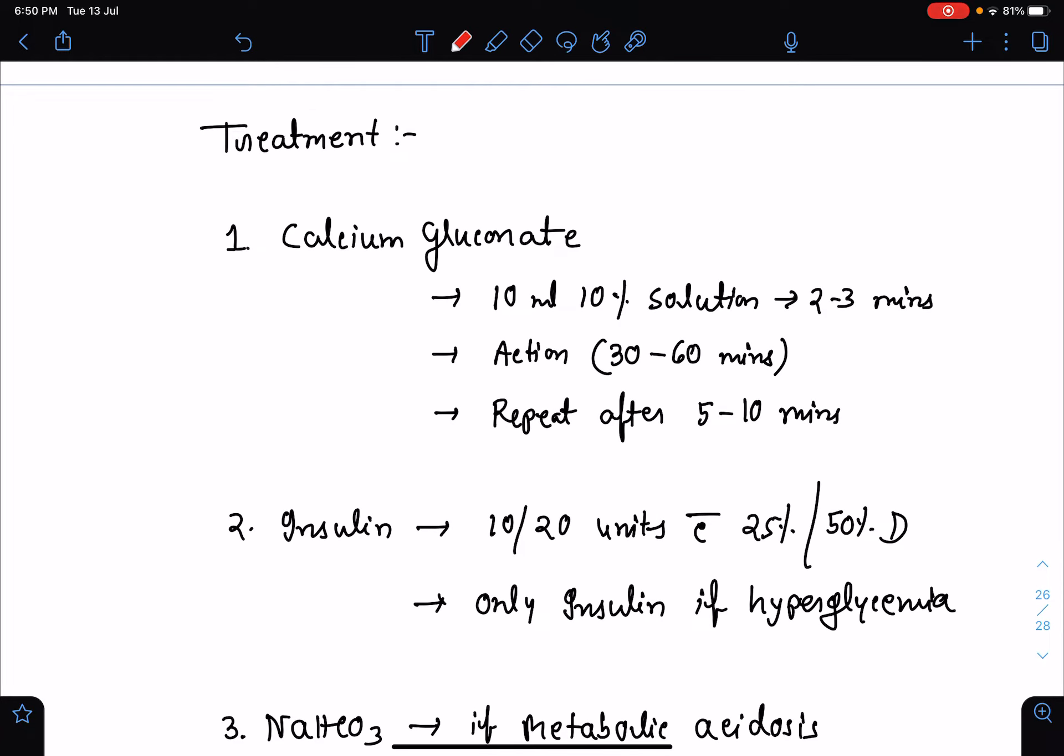If we talk about the treatment of hyperkalemia, first of all, calcium gluconate. Calcium gluconate reduces the membrane excitability, thereby it can result in stabilization of the cardiac muscle cells, which will prevent the fatal arrhythmias. We need to administer 10 ml of calcium gluconate 10% solution intravenously over 2 to 3 minutes. The action lasts for around 30 to 60 minutes. Within 5 to 10 minutes of administration, we need to recheck the ECG and if there is resolution of ECG finding, we may not repeat the dose. But if there is no resolution, then we need to repeat the dose after 5 to 10 minutes again.